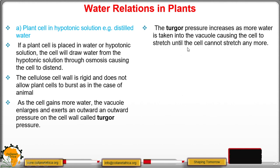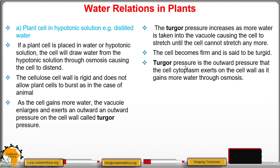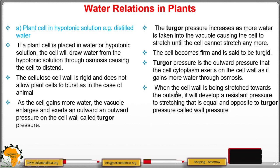This causes the cell to stretch until it can no longer stretch, at which point the cell is firm and very rigid. Turgor pressure is that outward pressure that the cell cytoplasm exerts on the cell wall as it gains water through osmosis. As the cell wall is stretched outward, it develops a resistance pressure equivalent but opposite to turgor pressure, and that is called wall pressure — the pressure developed by the cell wall as it is being stretched, equal and opposite to turgor pressure.